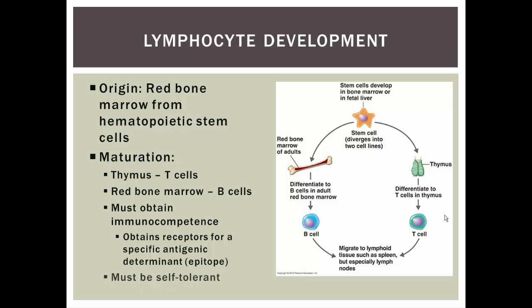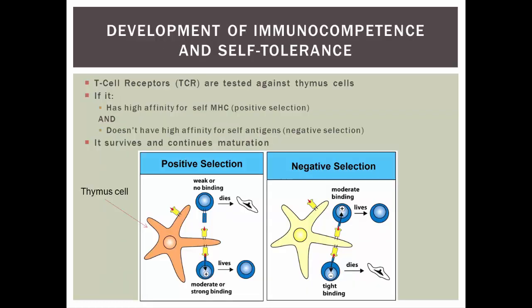The other thing is that they need to be self-tolerant. These T cells and B cells must know the difference between self and non-self — because if they don't, they'll start attacking their own cells. We know more about what's going on with T cells than B cells, so we'll focus on T cells. T cells migrate into the thymus, which is their school — where they get their education.